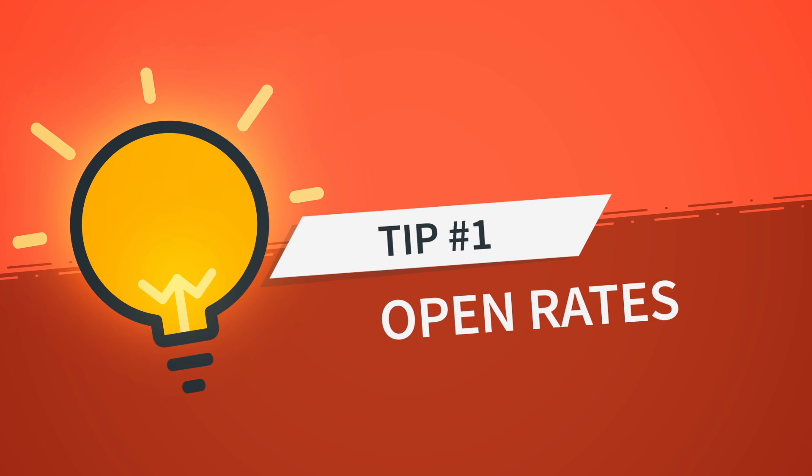First up, your open rates. Aptly named, open rates tell you how many subscribers opened up an email and who they are. But if your open rates are low, let's say around 5%, there are a few adjustments you can make to try to bring those numbers up.